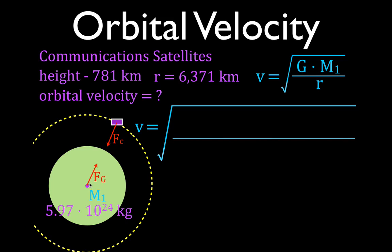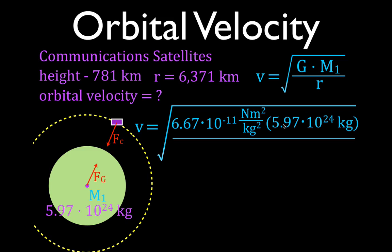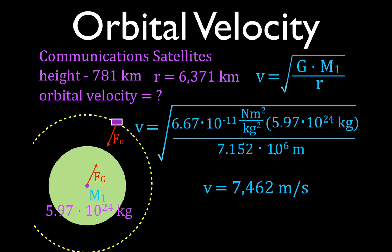Now we plug our values in. The gravitational constant G is 6.67 times 10 to the minus 11 newton meters squared per kilograms squared. The mass of the Earth is 5.97 times 10 to the 24 kilograms. For the distance, we add the two values together and convert to meters, giving us 7.152 times 10 to the 6th meters. This gives us a velocity of 7,462 meters per second, which converts to about 7.5 kilometers per second.